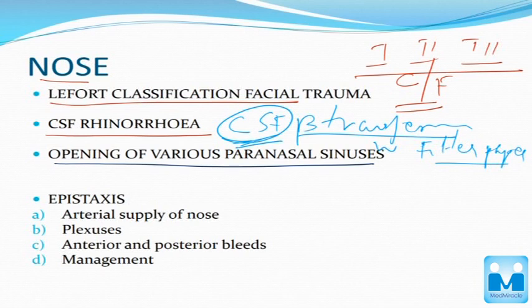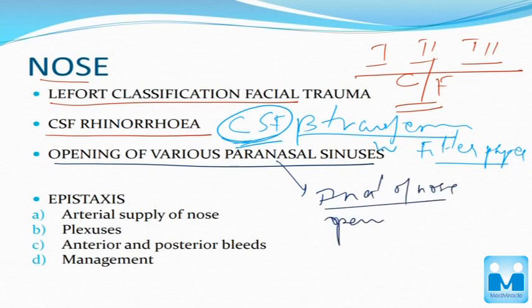The next important topic is the various openings of the paranasal sinuses. You have to know the anatomy, at least the openings, and the inferior turbinate, middle turbinate, superior turbinate, and meatus — you have to know in detail.